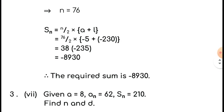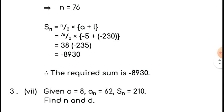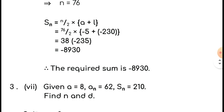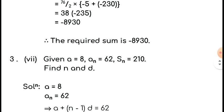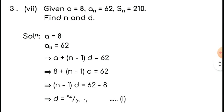Let us come to another problem from exercise 5.3, question number 3, part (vii). Given: a equals 8, a_n equals 62, S_n equals 210. We need to find n and d.